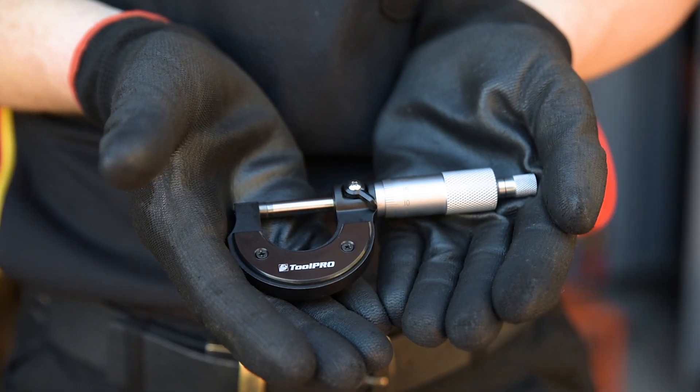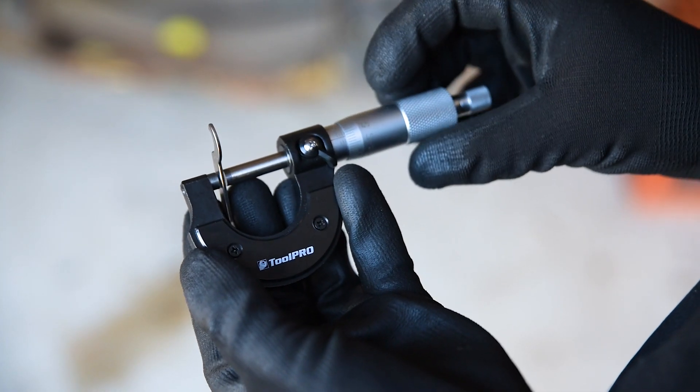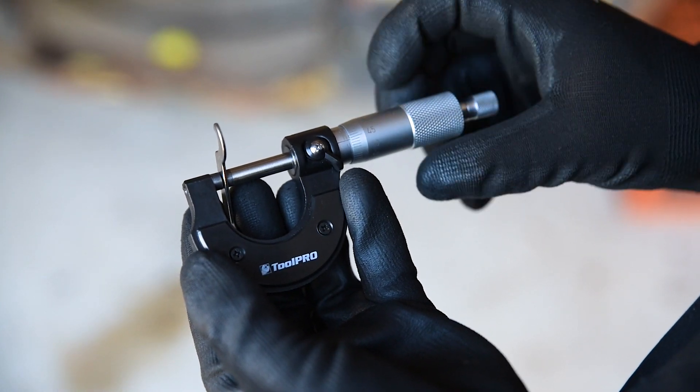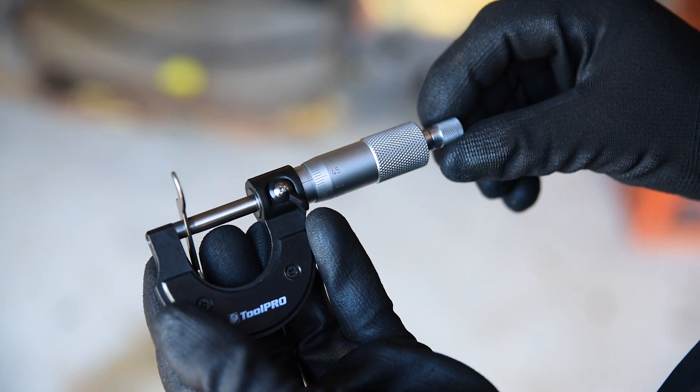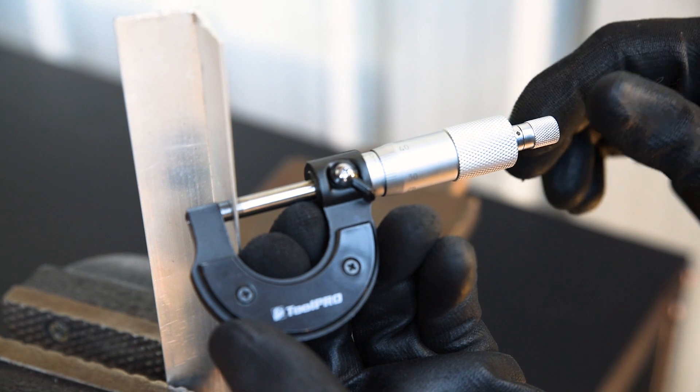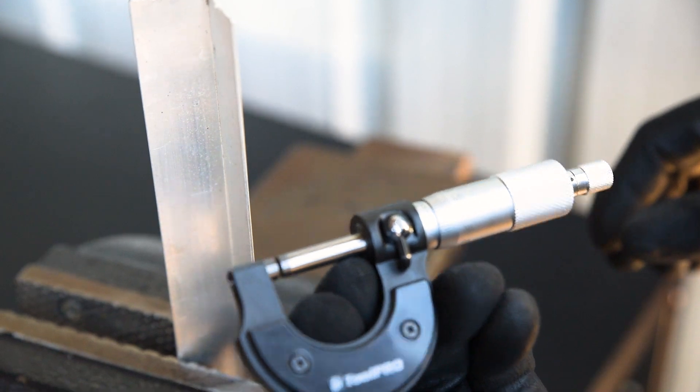Now that it's cleaned and zeroed, it's time to take a measurement. Place the item to be measured in the frame and rotate the thimble until the spindle nears the surface. Then use the ratchet to close the spindle until the ratchet clicks. At this point, you can take the measurement or lock the spindle, remove the micrometer, and then read the measurement.